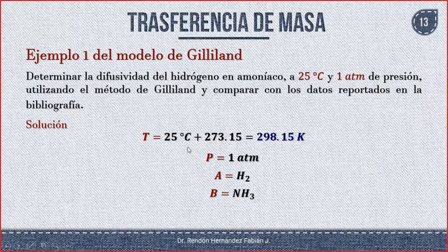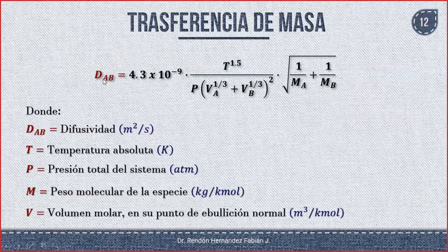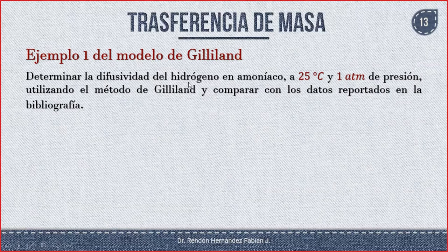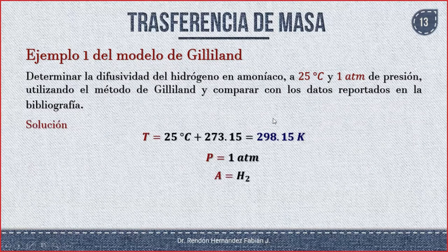El compuesto A va a ser el hidrógeno y el compuesto B el amoníaco. El modelo dice D de A hasta B, entonces necesito conocer cuál es A y cuál es B. El problema dice difusividad del hidrógeno en amoníaco, es decir, el hidrógeno se está difundiendo en el amoníaco. Por tanto, el hidrógeno es A y el amoníaco es B.